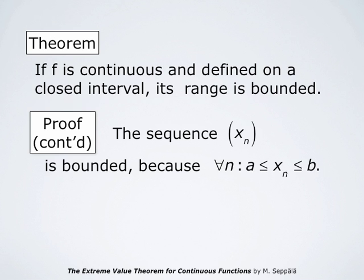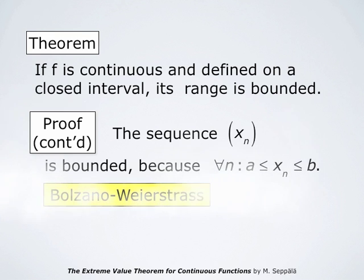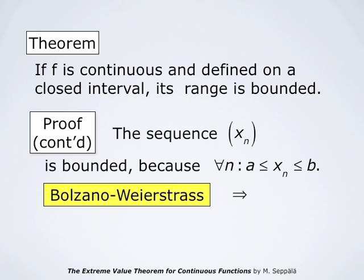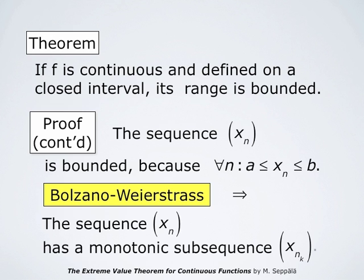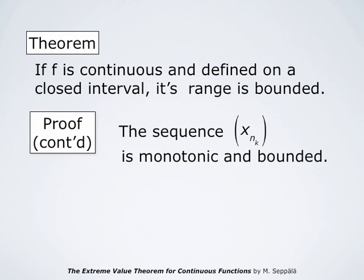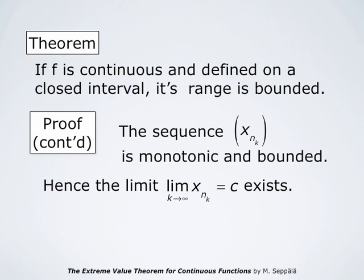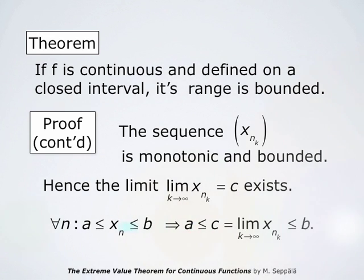The sequence x_n is bounded because each x_n lies between a and b. The Bolzano-Weierstrass theorem then implies that this sequence x_n has a monotonic subsequence, which we denote by x_{n_k}. The sequence x_{n_k} is monotonic and bounded, therefore it has a limit. So the limit of x_{n_k} as k approaches infinity is some point c, and since each x_n is between a and b, also the limit c is between a and b.